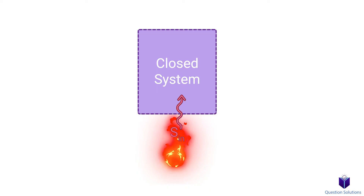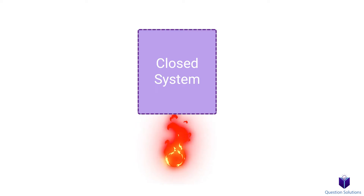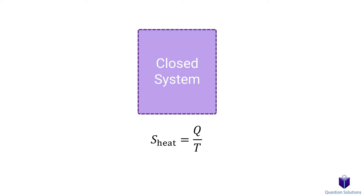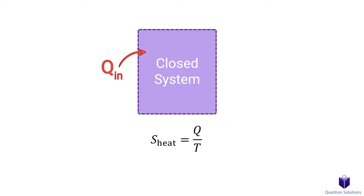In other words, if your system is closed and adiabatic, meaning no heat transfer, then entropy transfer is zero. So when heat is transferred to a system, this heat brings in molecular disorganization, which we call entropy. The equation to find it uses q, the heat transfer, and T, the absolute temperature at the location where the transfer takes place. If heat is transferred to the system, entropy is transferred to the system, and if heat is transferred out, entropy is also transferred out.